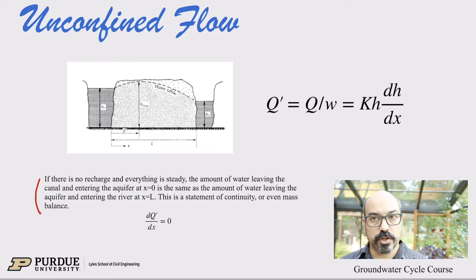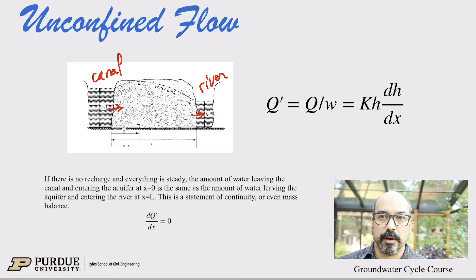The first question: if there is no recharge, so again we'll deal with recharge in the next video, which is when there is rain, and we have to deal with boundaries here that gives us rain, but for now we assume there's no recharge or nothing, so we're happy with that. So if there is no recharge and everything is steady, there's no change in time, then the amount of water leaving the canal and entering the aquifer at x equals zero, so assuming this is a canal and this is a river, so the amount of water coming from the canal into the aquifer and out of the aquifer into the river should be the same. There's continuity.